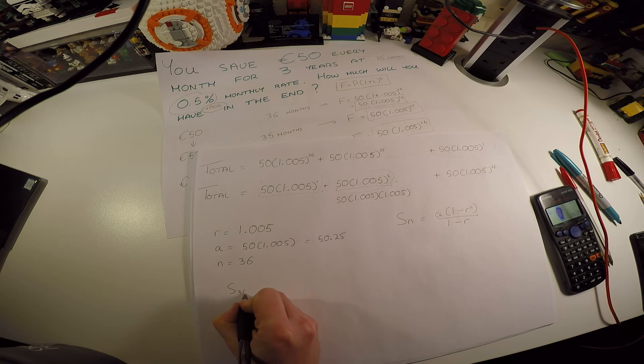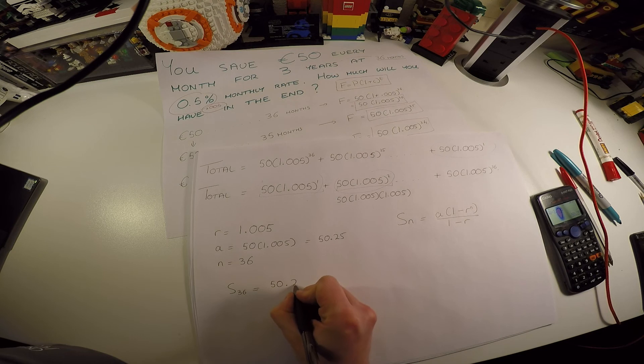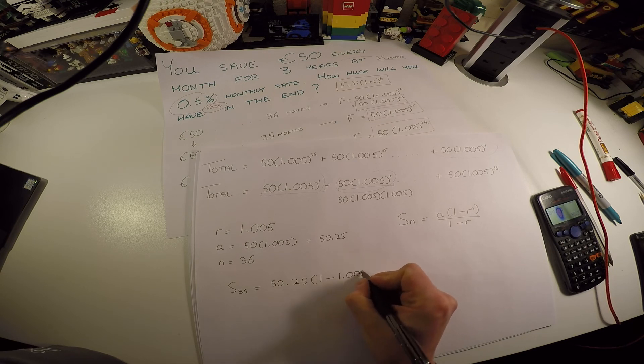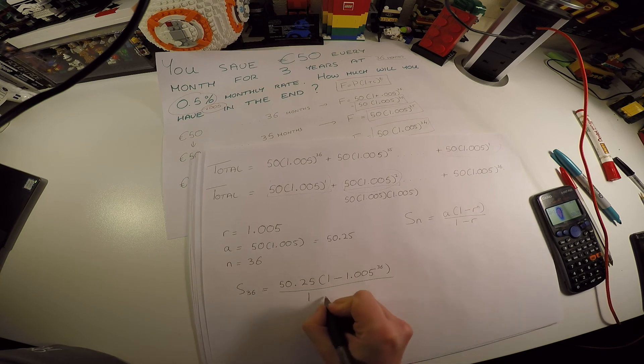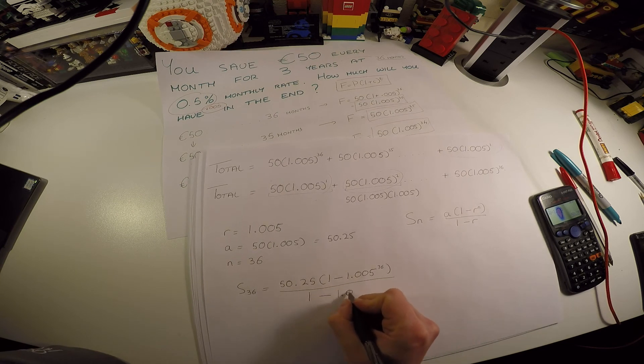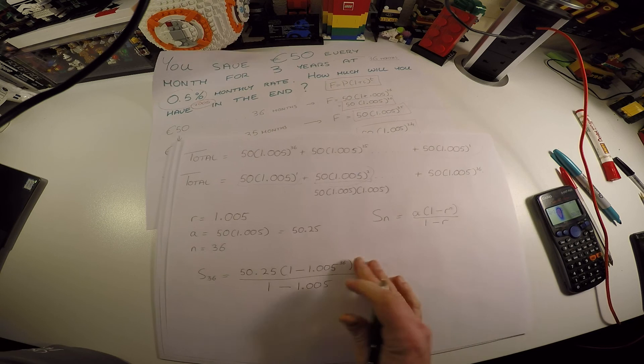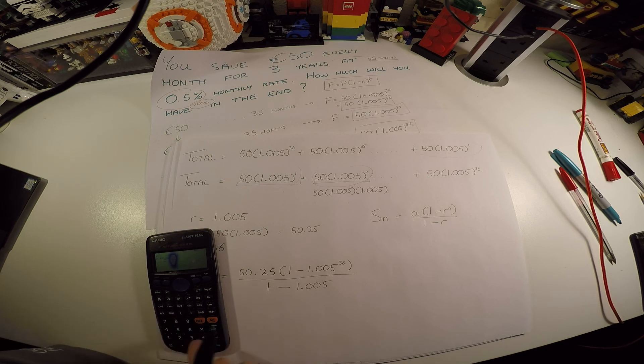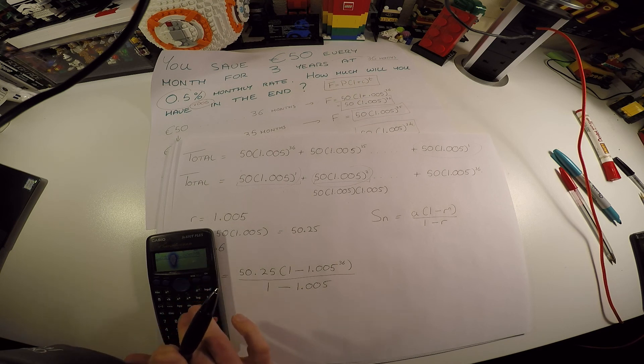So we're going to have S36 equals a, so that's 50.25 multiplied by (1 minus the ratio, 1.005, to the n, which is 36) all over (1 minus that ratio).